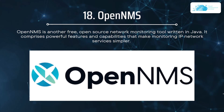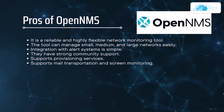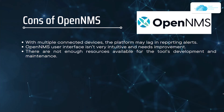Number eighteen on our list is OpenNMS. OpenNMS is a free open source network monitoring tool written in Java. It comprises powerful features and capabilities that make monitoring IP network services very simple. The pros include being a reliable and highly flexible network monitoring tool, easy management of small, medium, and large networks, simple integration with the alert system, and strong community support. The cons are that with multiple connected devices the platform may lag in reporting alerts, the user interface is not very intuitive and needs improvement, and there are not enough resources available for the tool's development and maintenance.